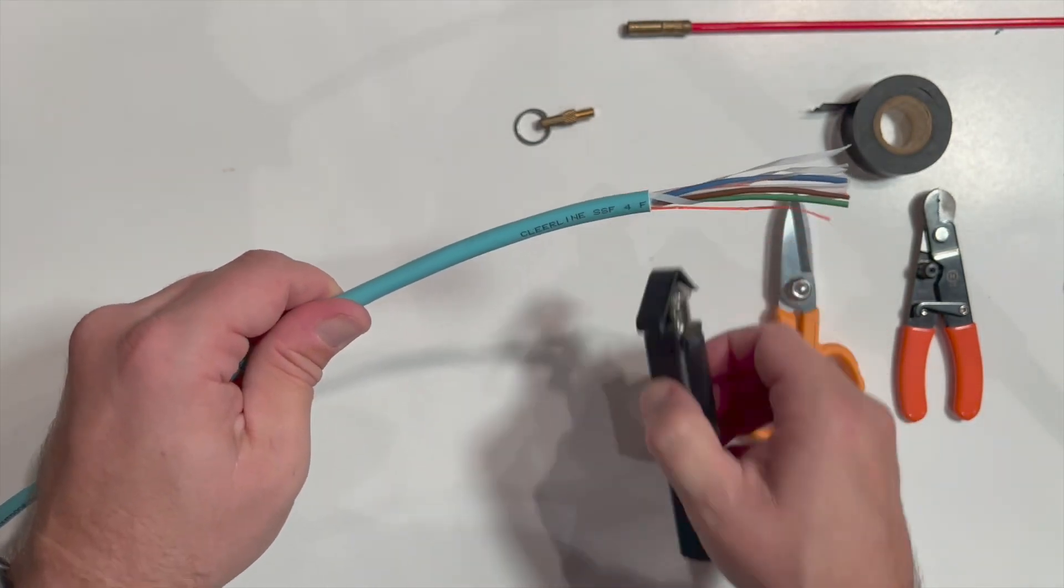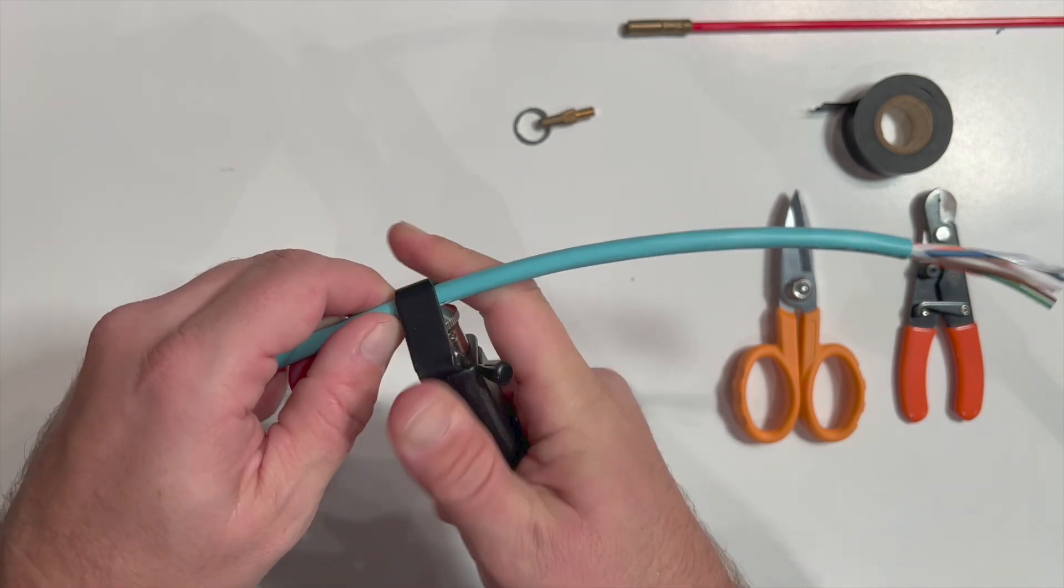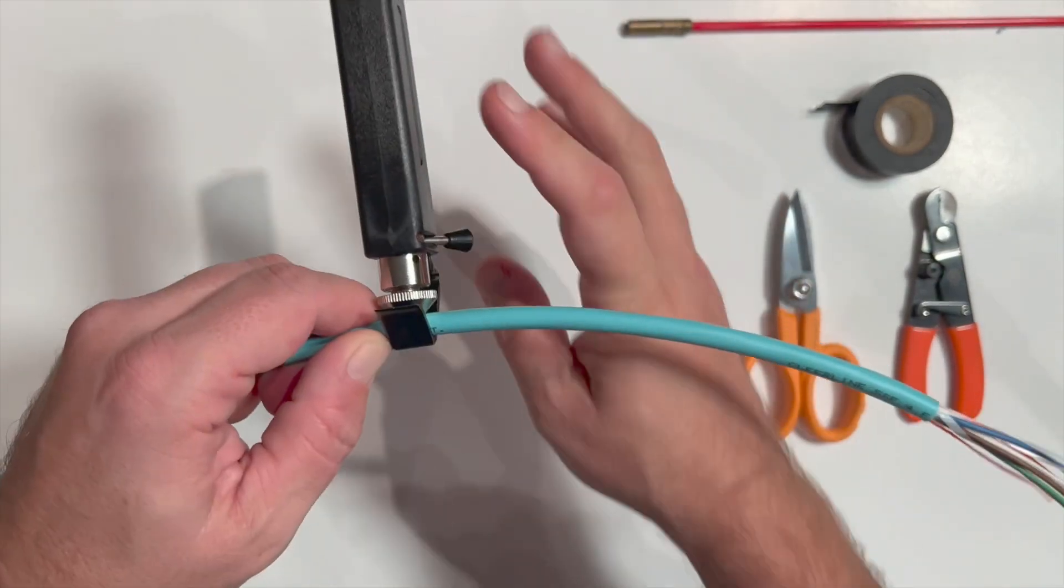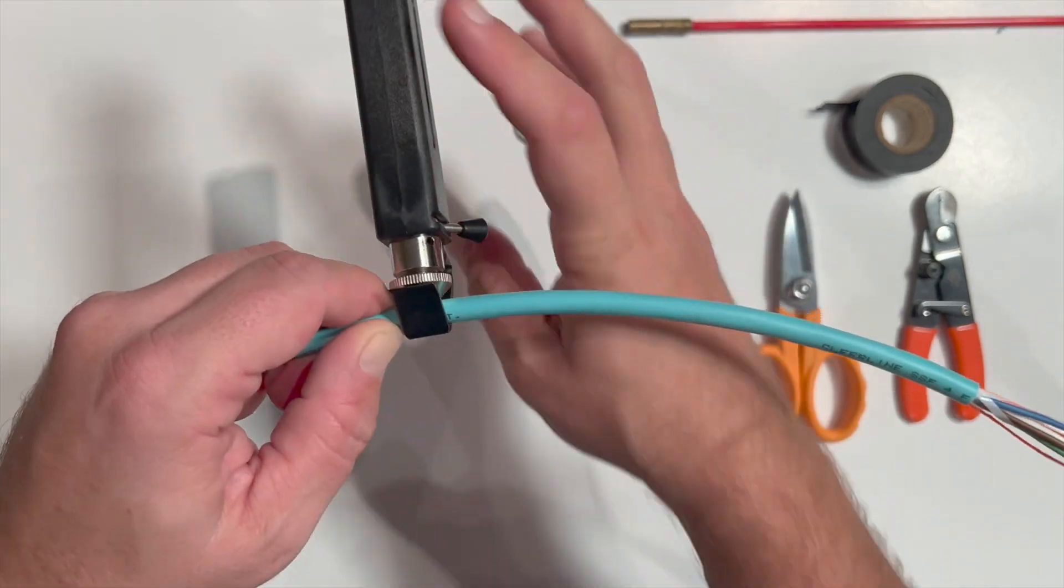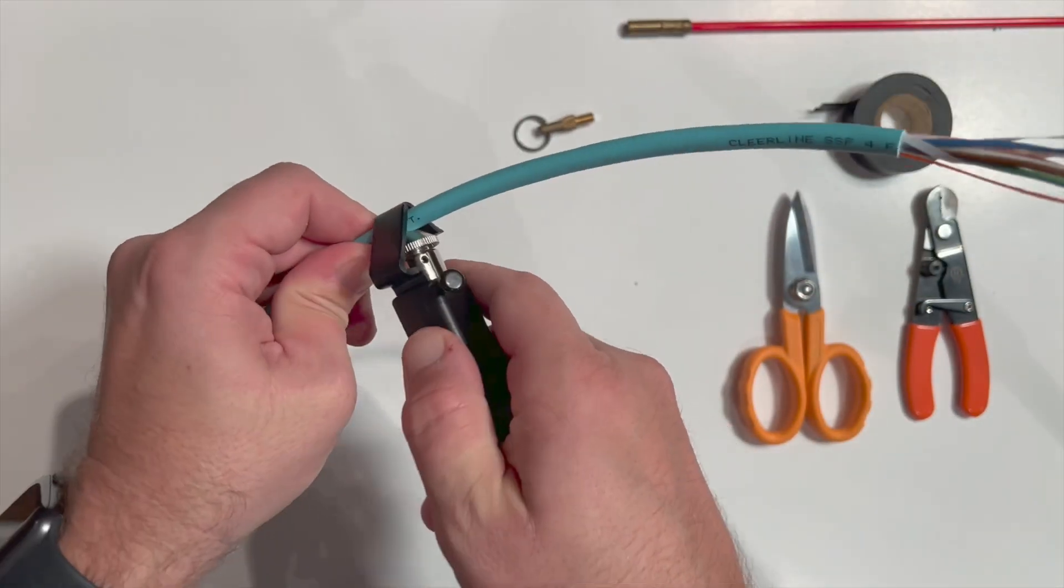Now take the slitting tool to approximately 12 inches or 30 centimeters along the outer jacket and perform a second radial cut. Once the radial cut is complete, rotate the blade to the longitudinal position and slide the tool along to the end.